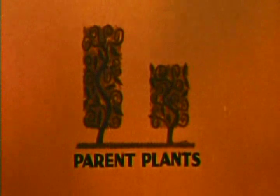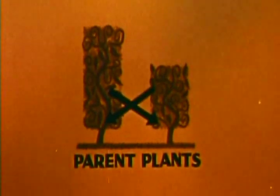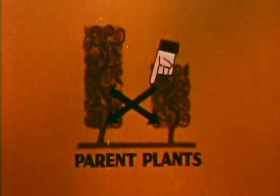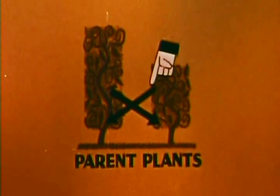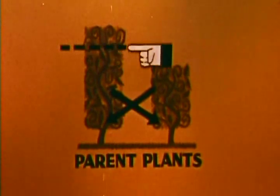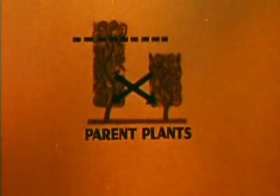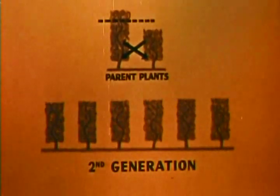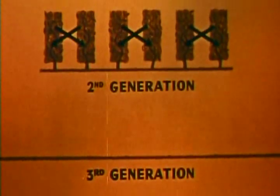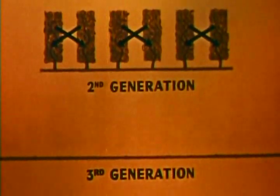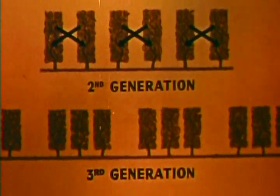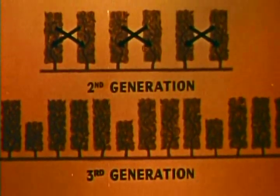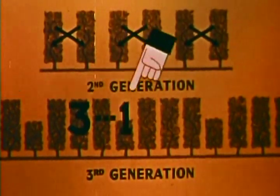"And so, gentlemen, I crossed a pure strain of tall plants with pure short plants by putting some pollen from one strain onto the flower of the other. You might suppose that their offspring would be medium-sized plants, but not so. The next generation were all tall plants. And now when I crossed these plants among themselves, three-fourths of the grandchildren came out tall, and one-fourth came out short. On an average, tall plants outnumber the short by just about three to one."